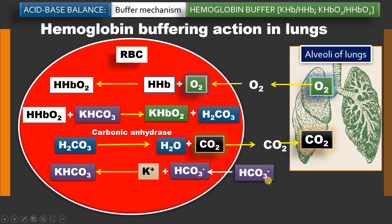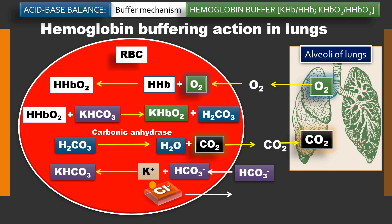Since one anion — bicarbonate — is coming inside the RBC, in order to maintain electroneutrality another anion must go outside. So chloride moves out of the RBC into the plasma. This is again called the chloride shift.